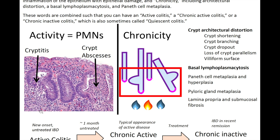Timeline-wise, new onset untreated inflammatory bowel disease is typically going to be an active colitis — you'll see more neutrophils. Activity is associated with PMNs or neutrophils. You can see cryptitis, which is neutrophils within the epithelium of the crypts, or crypt abscesses, which is when neutrophils fill the lumen of those crypts, forming a little abscess. Either of those will give you at least the term 'active' in the diagnosis.